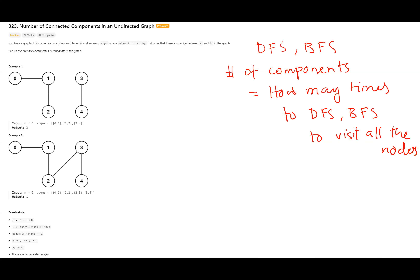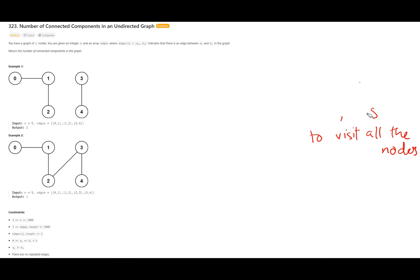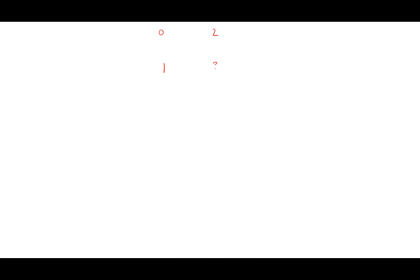Today we're going to solve it using Union Find. If we have time later, I'll come back and solve it using DFS/BFS, but I'd suggest you try that yourself. In Union Find, the idea is that initially we think of each node as separate — nodes 0, 1, 2, 3, 4 are all separate.